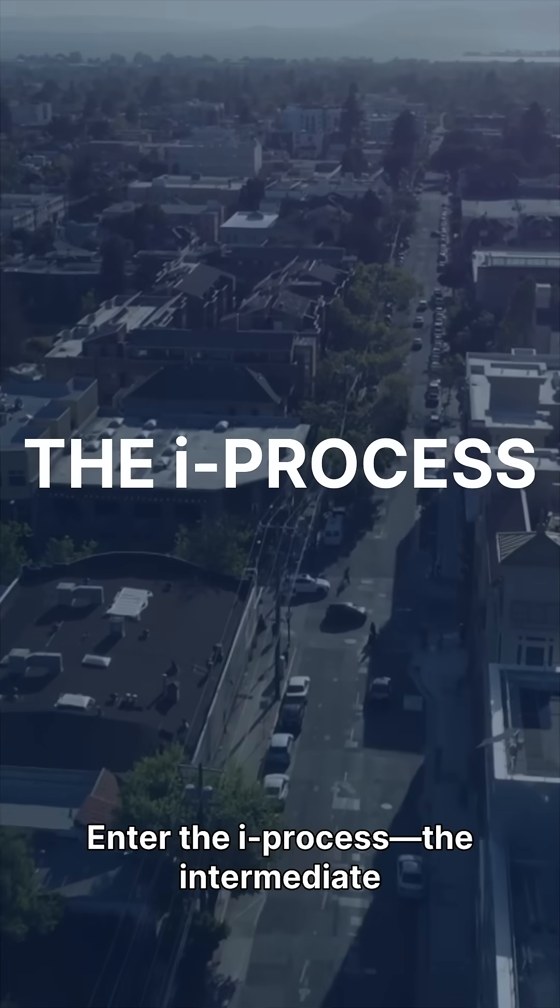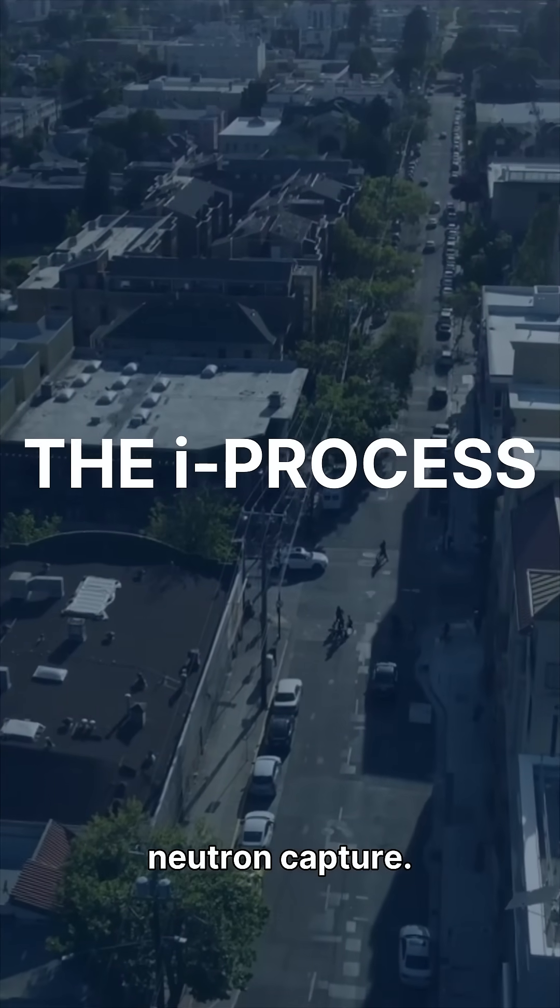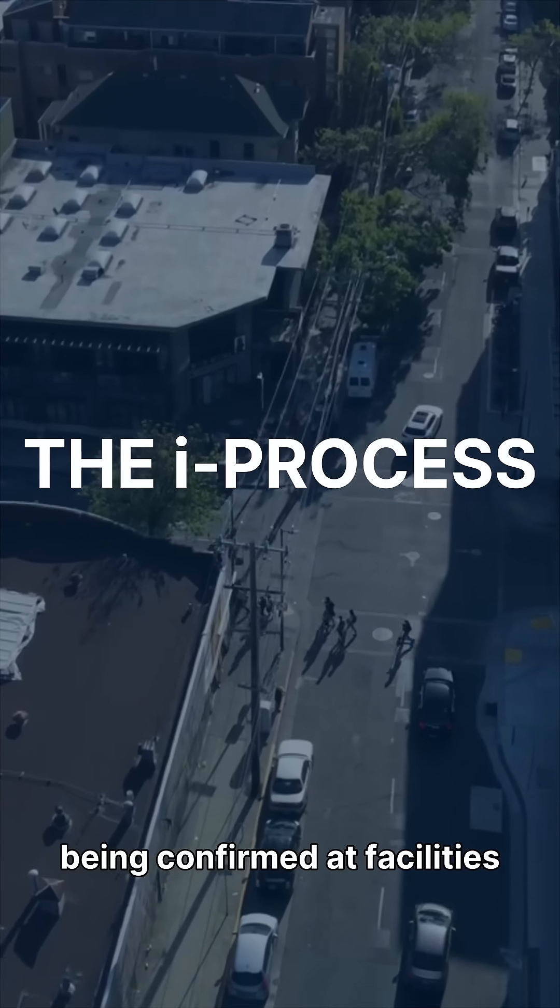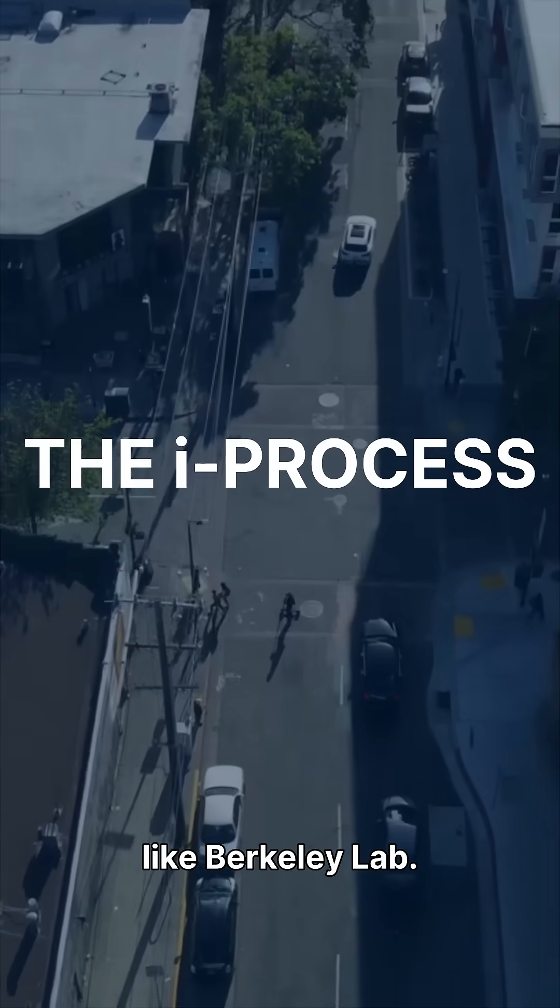Enter the I process, the intermediate neutron capture. First proposed in 1977, then forgotten, it's now being confirmed at facilities like Berkeley Lab.